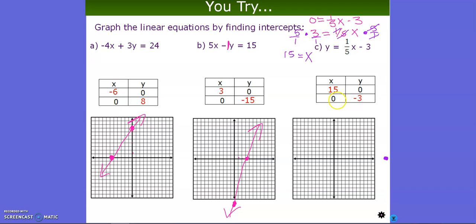And then lastly, we're going to replace the x with 0. This one's a little bit easier. We have y equals 1/5. Plug in 0 minus 3. 1/5 times 0 is just 0. So we get y equals negative 3. So that is right here. And we'll go ahead and graph them with a straight line. And that is how you graph intercepts.